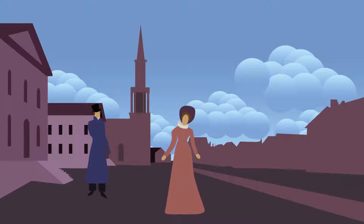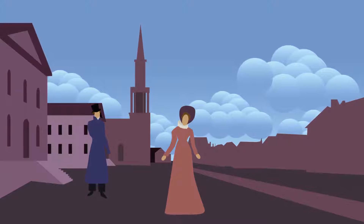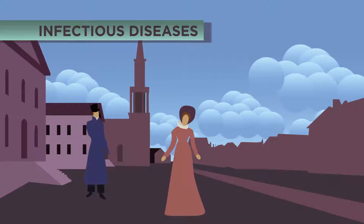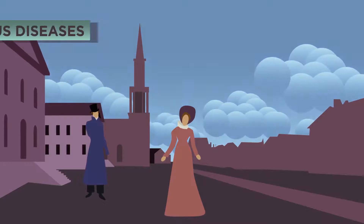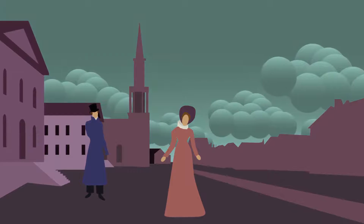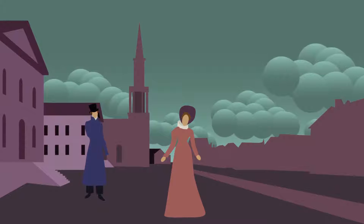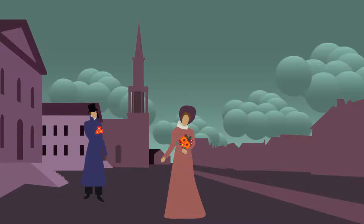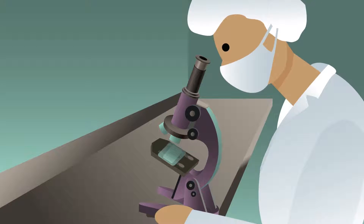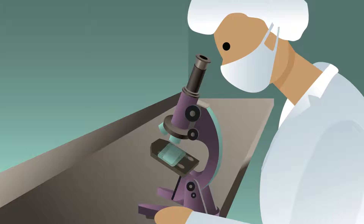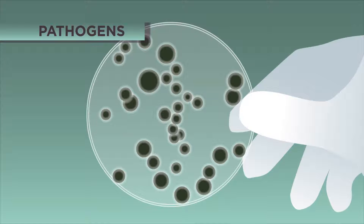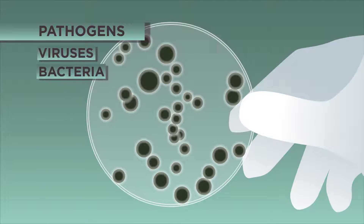Did you know that it wasn't until around 200 years ago that people knew what caused infectious diseases? Before that, they believed one cause was bad air, and so they carried around bunches of sweet-smelling flowers to sweeten the scent of the air and prevent disease. Thanks to the invention of the microscope and the experiments carried out by scientists, we now know that infectious diseases are caused by pathogens such as viruses and bacteria.